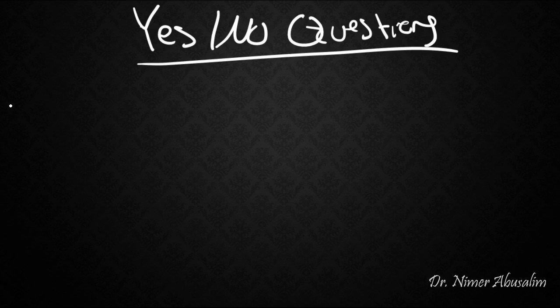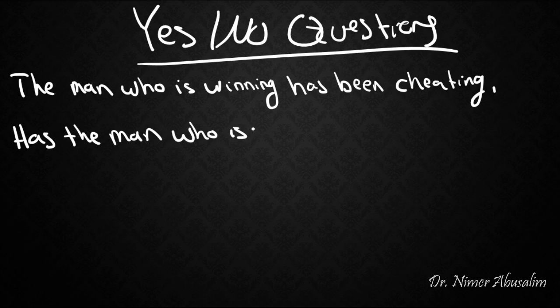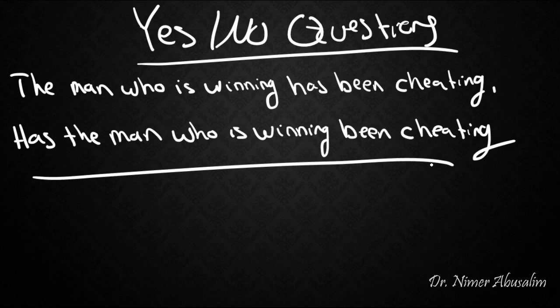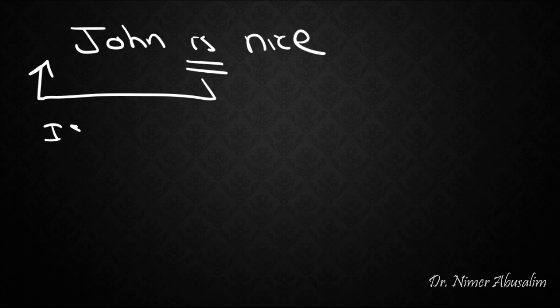Let's try to follow the scientific method. Take the sentence 'the man who is winning has been cheating.' A yes/no question for this sentence would be 'has the man who is winning been cheating?' To understand how we get there, let's start with a simpler sentence: 'John is nice.' The yes/no question form would be 'is John nice?'